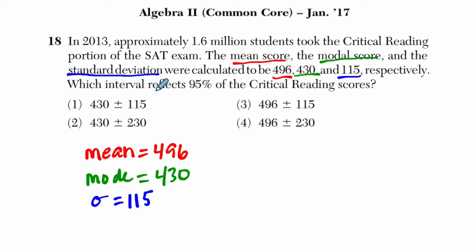Which interval reflects 95% of the critical reading scores? So this is based on a normal curve, and the idea is that if you have a normal curve, it looks something like this, maybe a little bit too steep there.